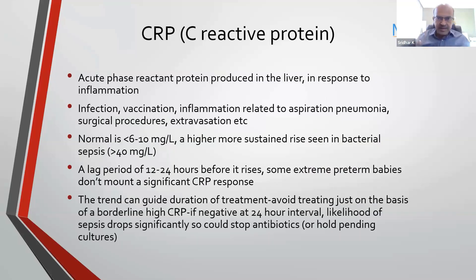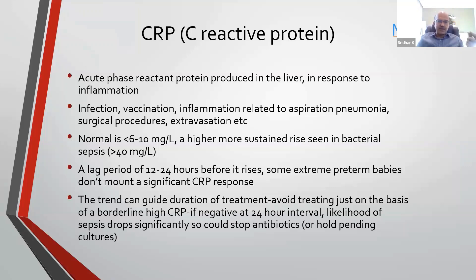Coming to the inflammatory markers, the two main ones most of us use are C-reactive protein and procalcitonin. There are a few more in the pipeline but they are not routinely available. CRP is an acute phase reactant protein produced in the liver in response to inflammation. Sepsis is only one cause — we also have vaccination, meconium aspiration, blood aspiration, pneumonia, procedures, surgery, extravasation, and injury.